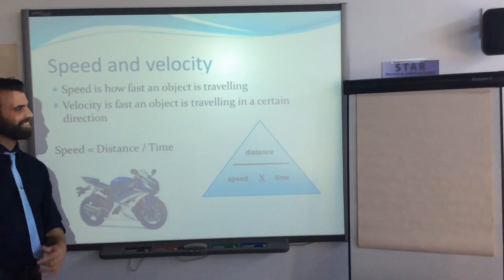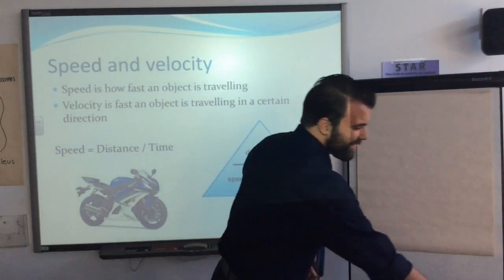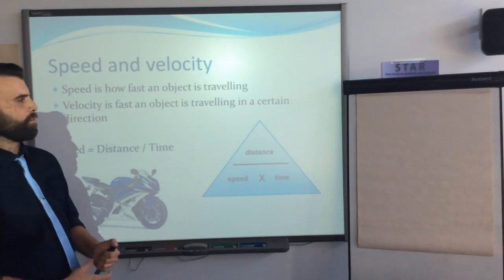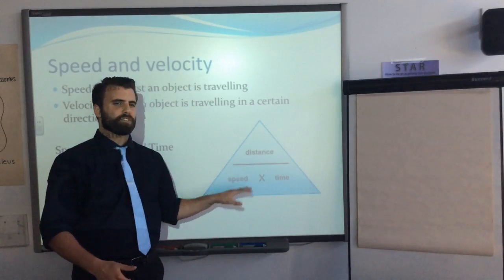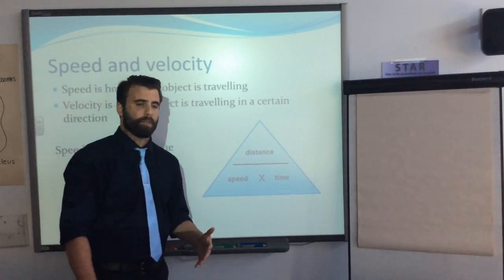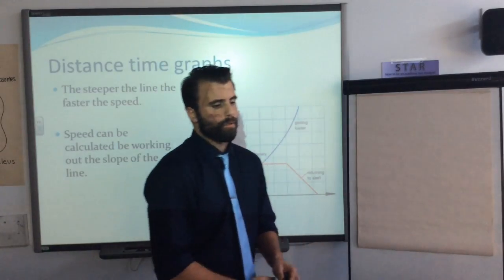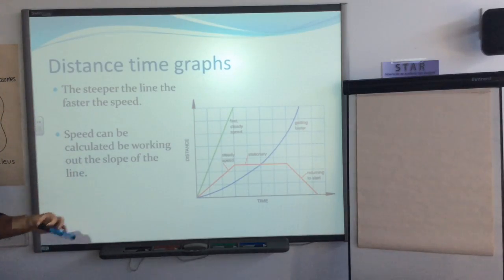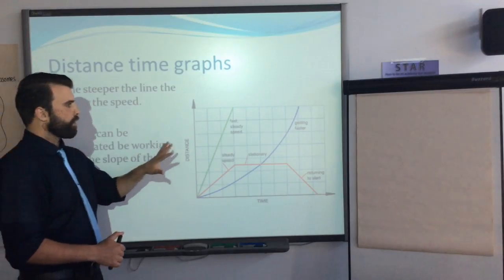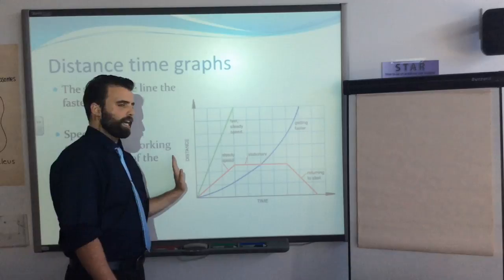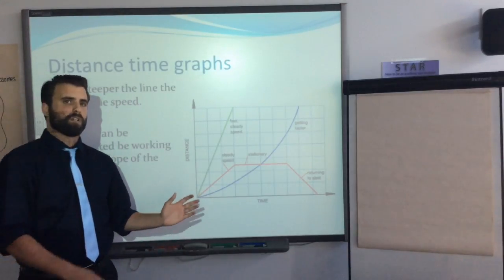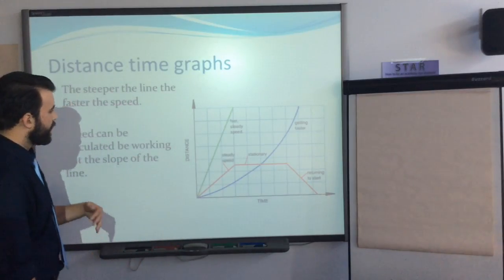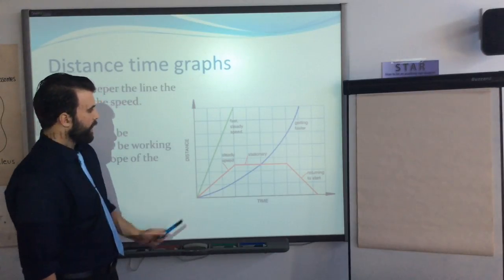Just like any equation, they'll give you two of the three values and you have to find the third. What you're really going to see is something called a distance-time graph, and you can calculate speed from it. It's important that when a graph comes up you keep note of what's on the axes, because we're also going to talk about a velocity-time graph and a lot of students get them mixed up.